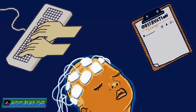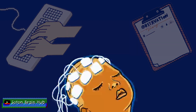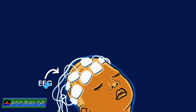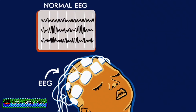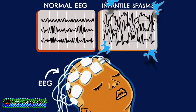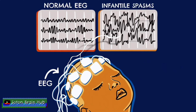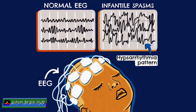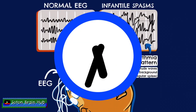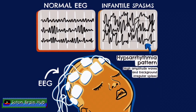An accurate diagnosis involves a combination of detailed descriptions of the episodes and an EEG. The classical EEG pattern of hypsarrhythmia is more likely to be seen early on in the disease process. This hypsarrhythmia will show random high-voltage spikes and slow waves of varying amplitude, arising from multiple foci that vary over time. The background of the EEG is generally chaotic.